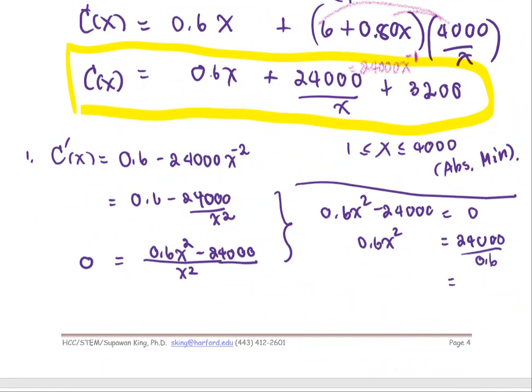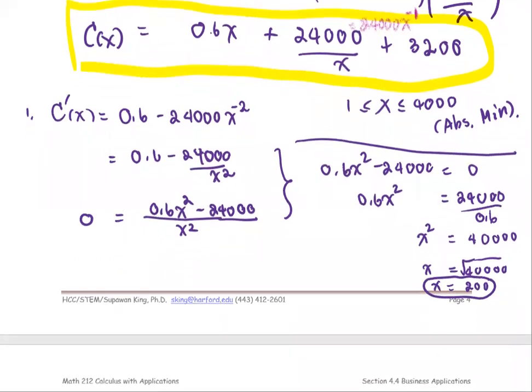We write it as one group: 0.6X squared minus 24,000. We let it be 0 and solve for X by working on the numerator: 0.6X squared minus 24,000 equals 0, or 0.6X squared equals 24,000. That gives us 40,000. Then X would be the square root of 40,000. That gives us X equals 200, which is between 1 and 4,000. So we're going to keep X equals 200 as the critical point.